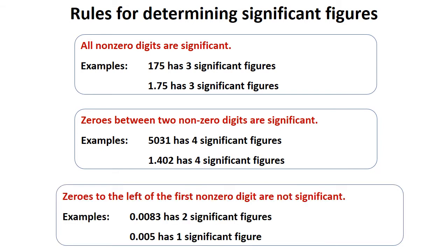Third rule is: zeros to the left of the first non-zero digit are not significant. For example, 0.0083 has two significant figures and 0.005 has one significant figure. So the zeros to the left of the first non-zero digit are not significant.